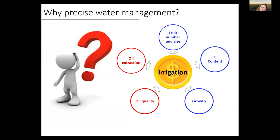Irrigation is an extremely important management practice in orchard systems because it's highly correlated to multiple productive parameters. It's essential for having good production, good yield, and good income. Doing good irrigation management can impact yield and other parameters of system health strongly. It affects mainly all the physiological and productive processes of a tree — fruit number and fruit size, vegetative growth, oil content, oil extraction, and oil quality.